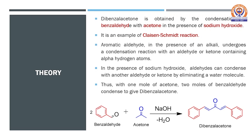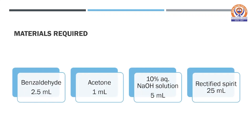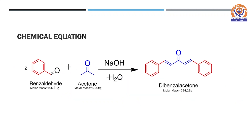The reaction can be summarized as: two moles of benzaldehyde reacting with acetone in the presence of base leading to formation of dibenzyl acetone. The materials required are benzaldehyde 2.5 ml, acetone 1 ml, 10% aqueous NaOH solution 5 ml, and rectified spirit 25 ml. The chemical equation shows two moles of benzaldehyde reacting with one mole of acetone in the presence of base, with the loss of a water molecule, forming dibenzyl acetone. The molar masses of the reactants and product are also shown, which are useful in calculating the theoretical yield.